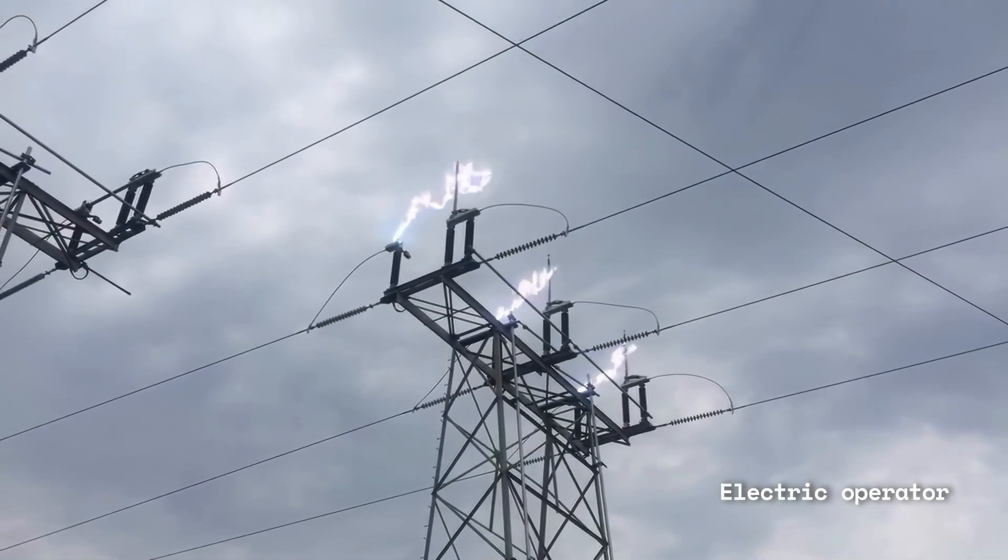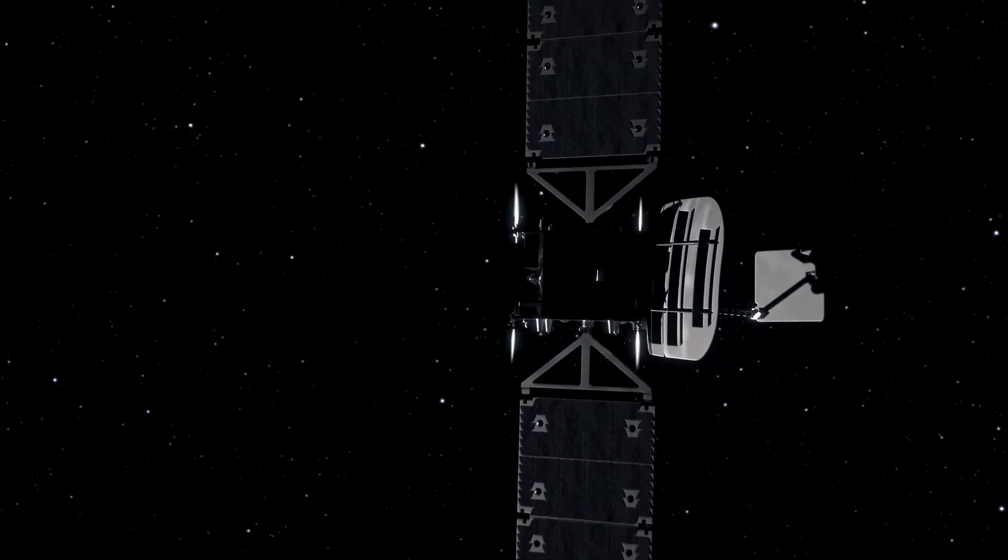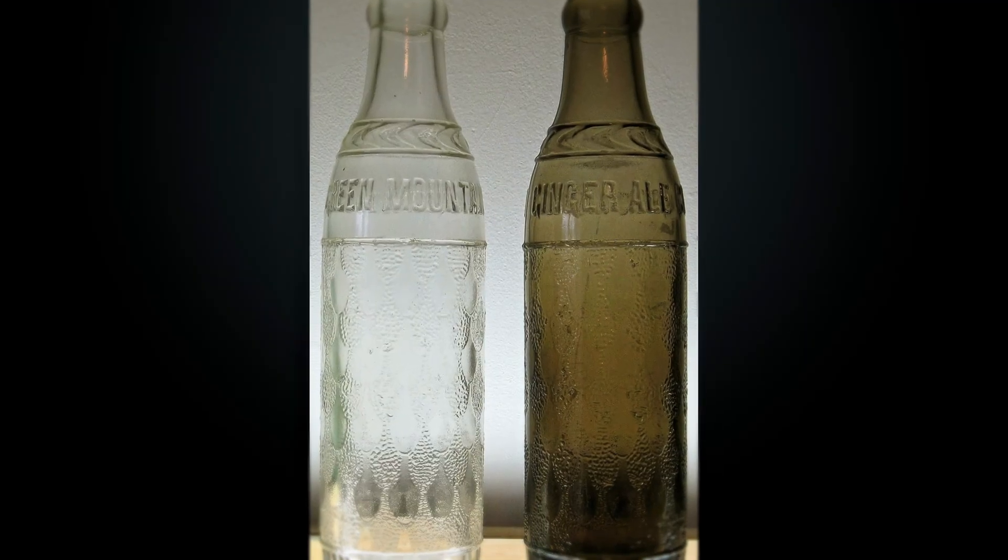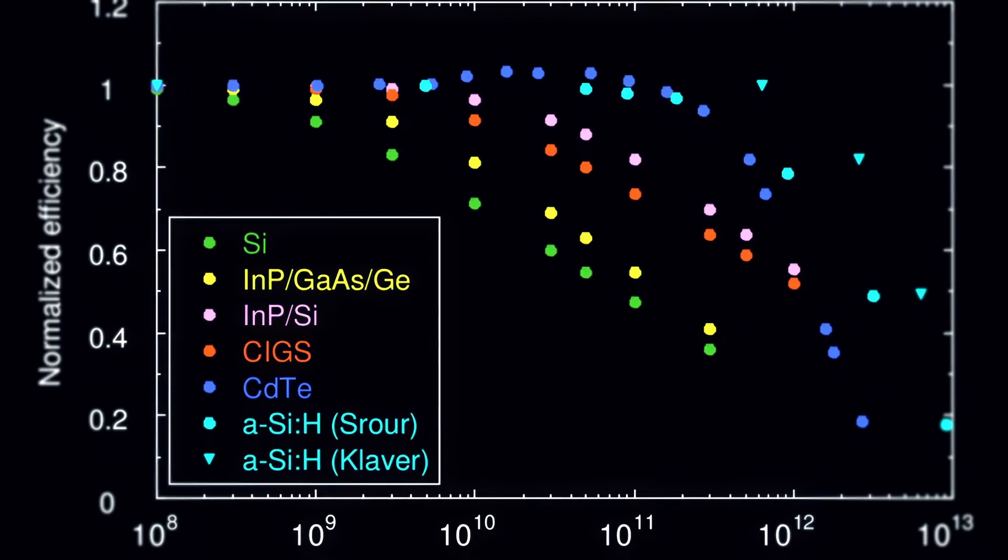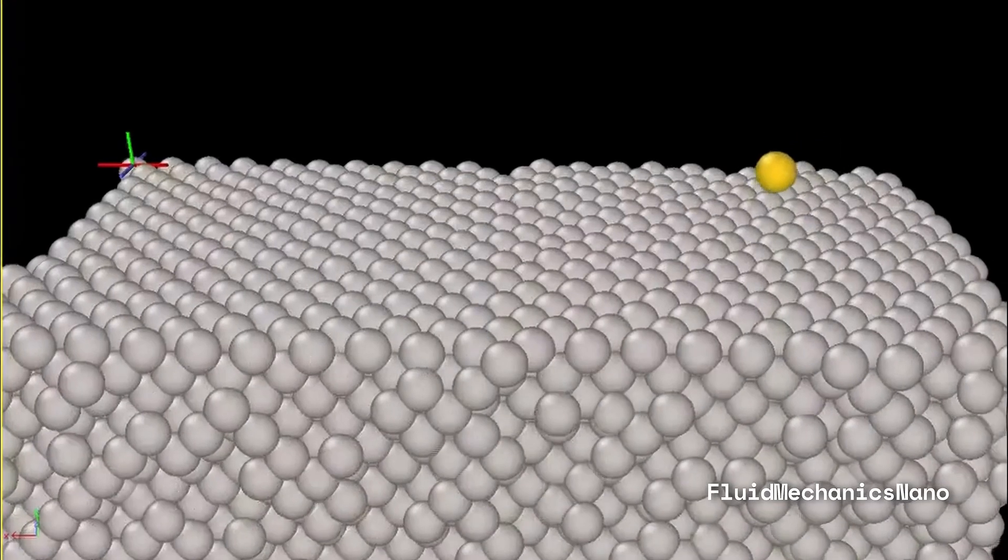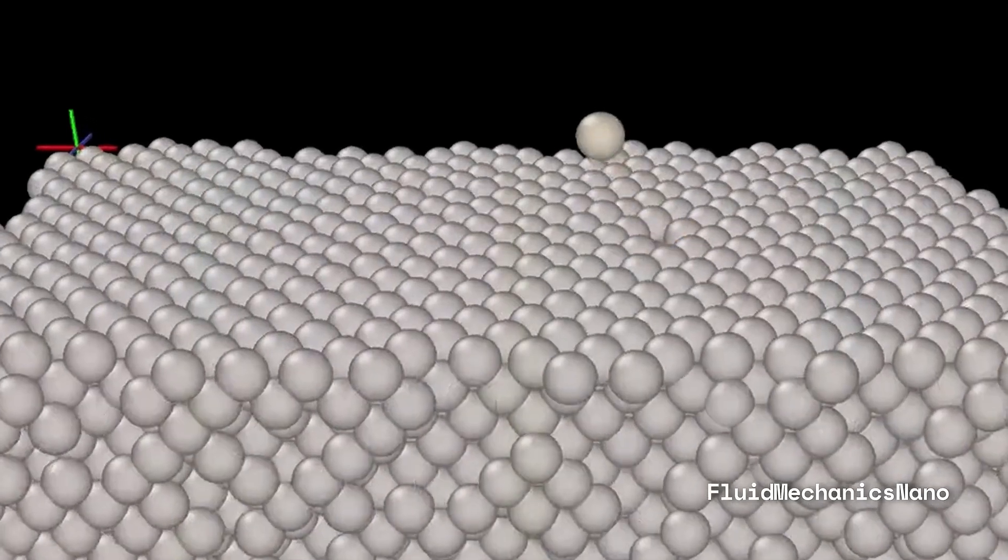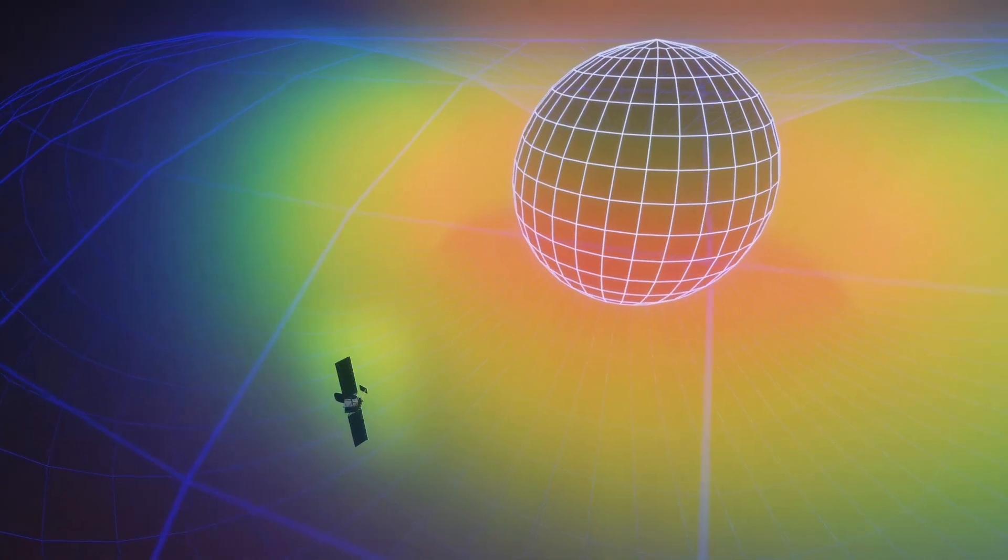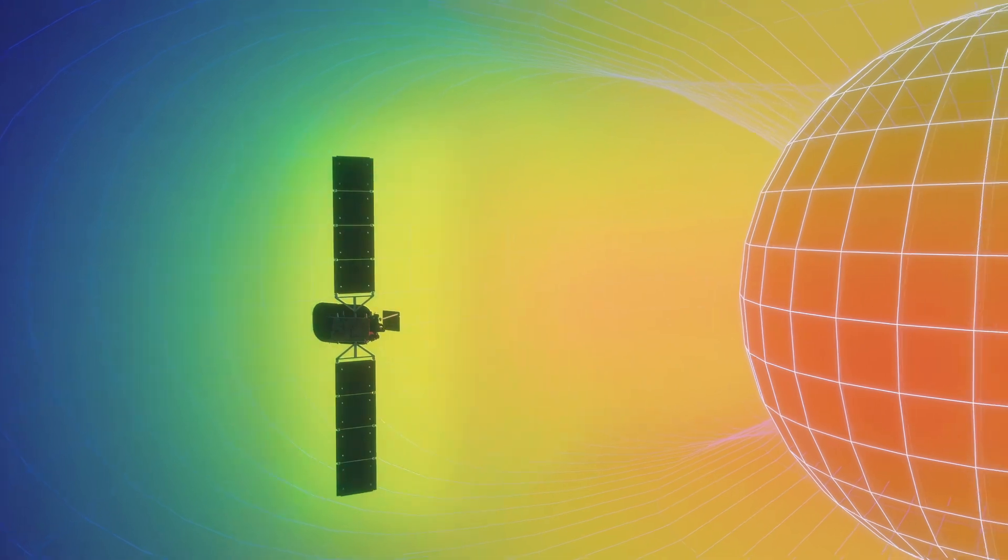This could make things draw more current, could change how fast things turn on or off, or how slow a computer might operate. Outside of electronics, the total ionizing dose can physically change the properties of materials. For example, over time, glass that's in space will actually go from clear to brown and kind of muddy. And last but not least, there's displacement dose damage. This is caused by very energetic and large mass particles that, upon contact with our chips, can literally knock an atom off its lattice and cause a defect. Those are the top-level ways radiation can impact hardware in space.